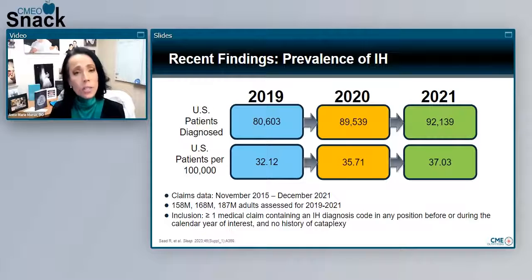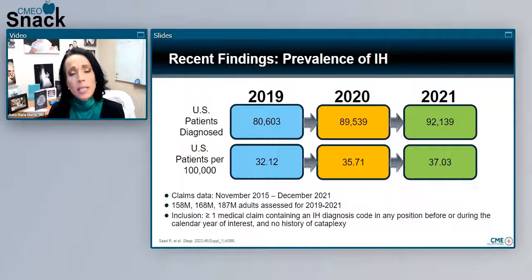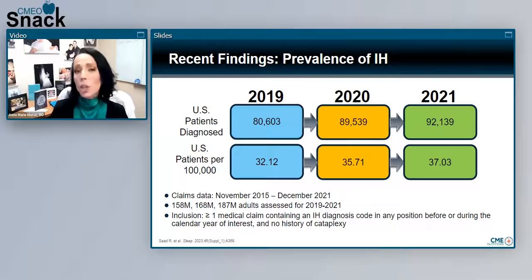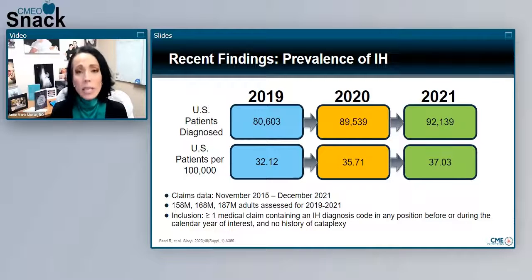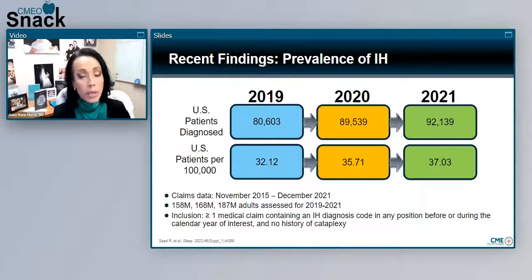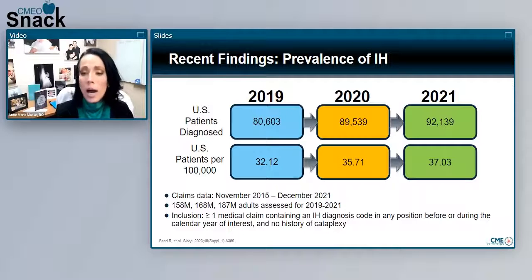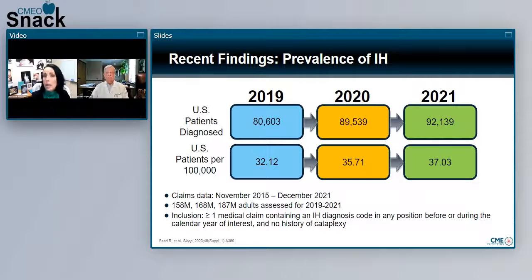One of the biggest challenges with central disorders of hypersomnolence is nailing down actual prevalence. Since their initial characterization in the 1950s, the terminology has changed over time. We frequently rely on medical claims data to estimate trends. Looking at a recent study examining medical claims data between 2019 and 2021, we are identifying this disorder occurring at somewhere between 30 and 40 per 100,000 people, and year after year we're seeing an increase in the number being diagnosed.